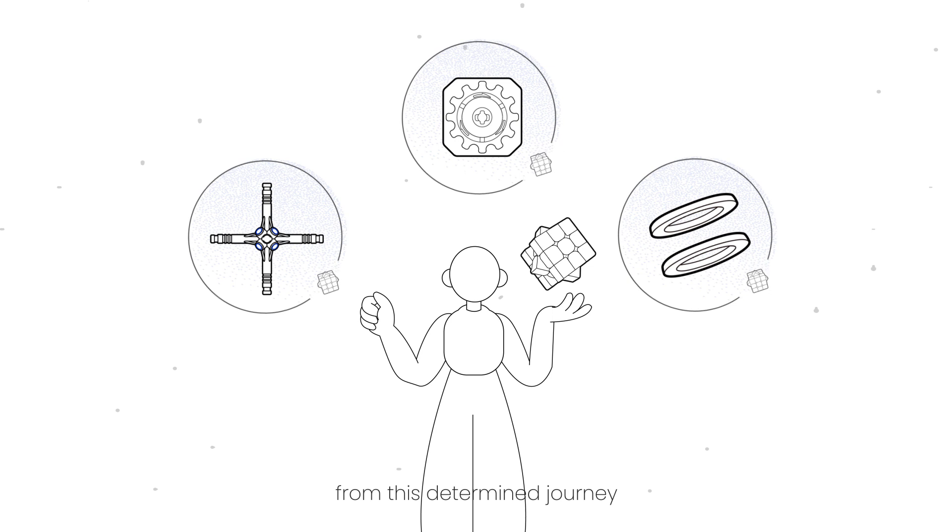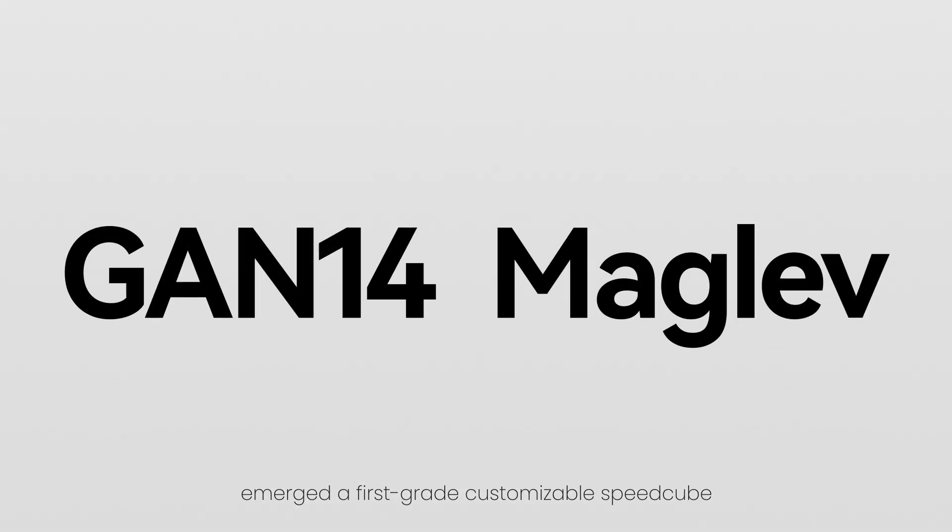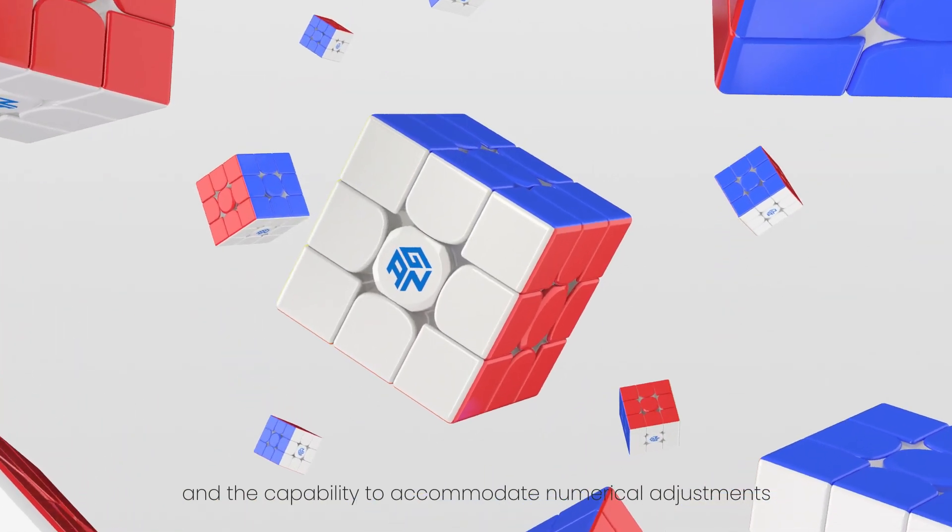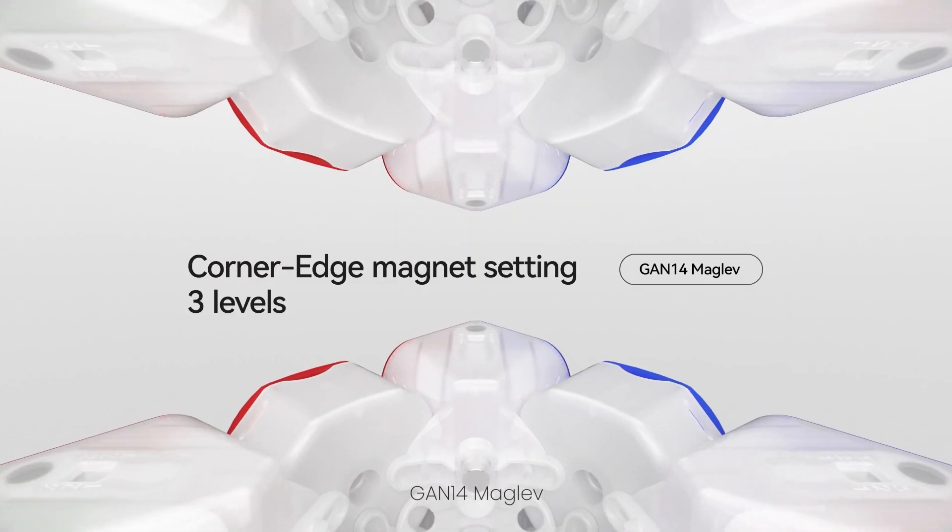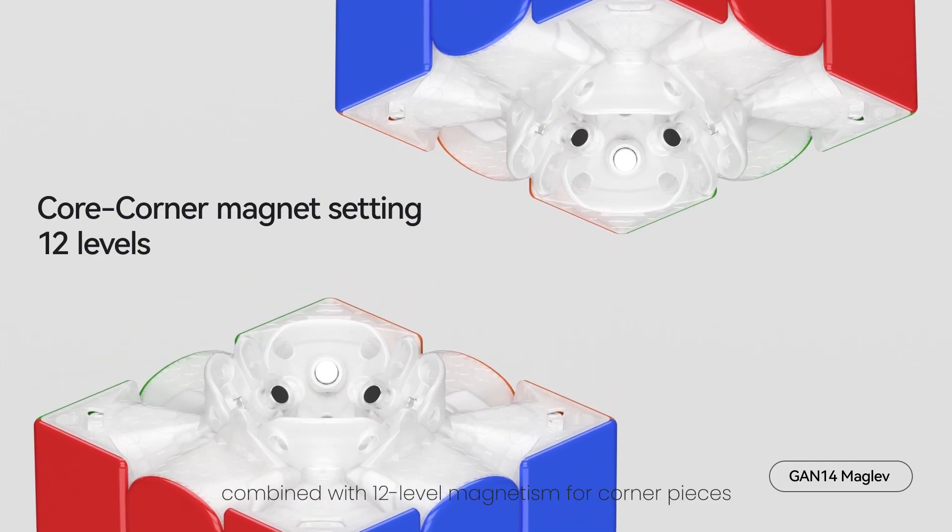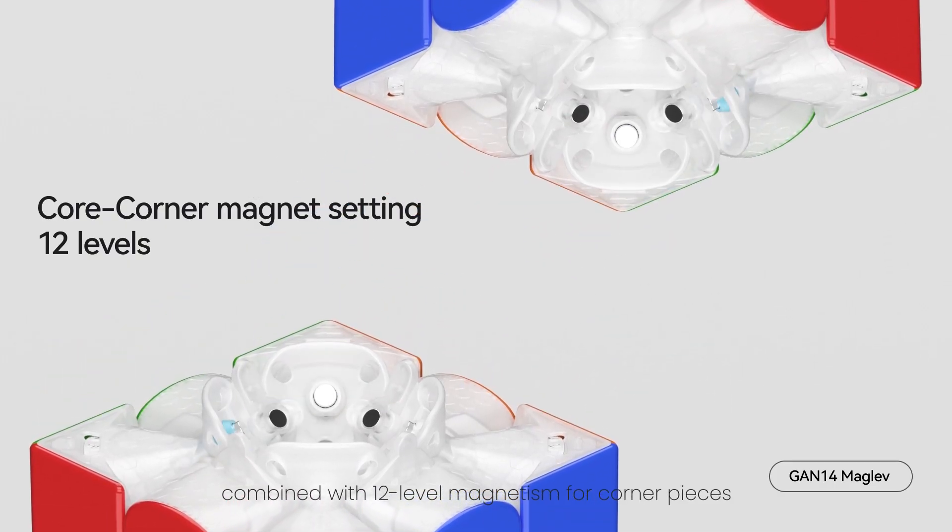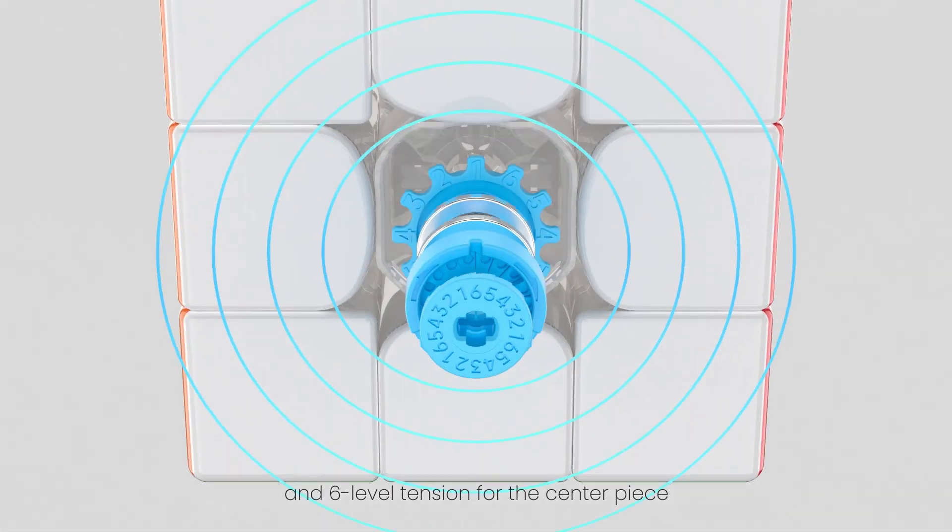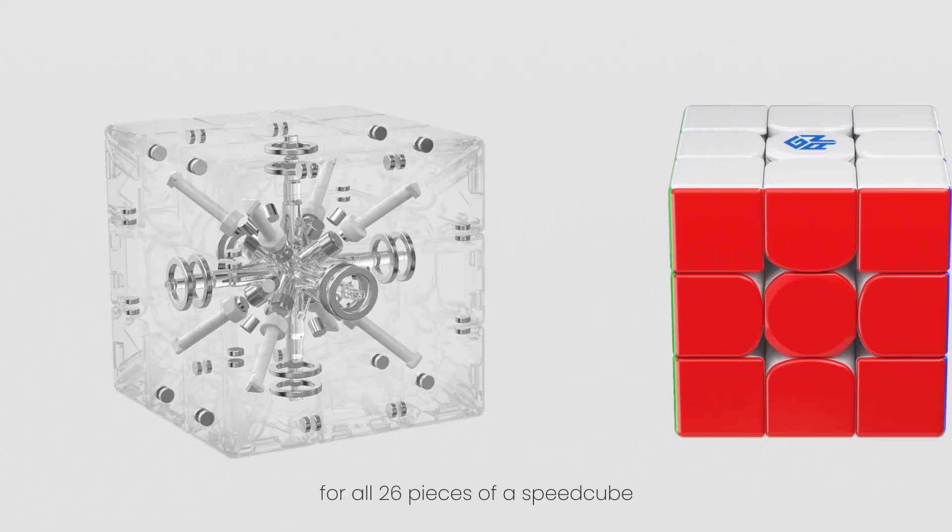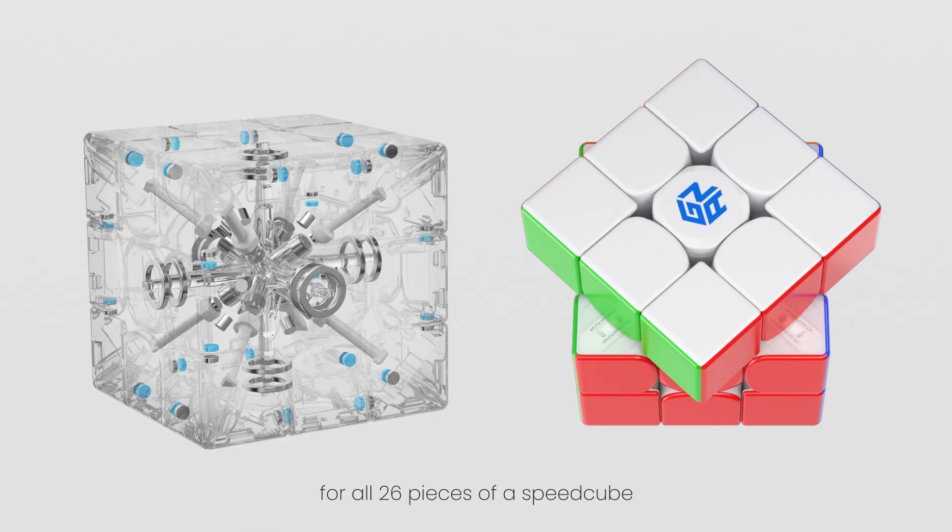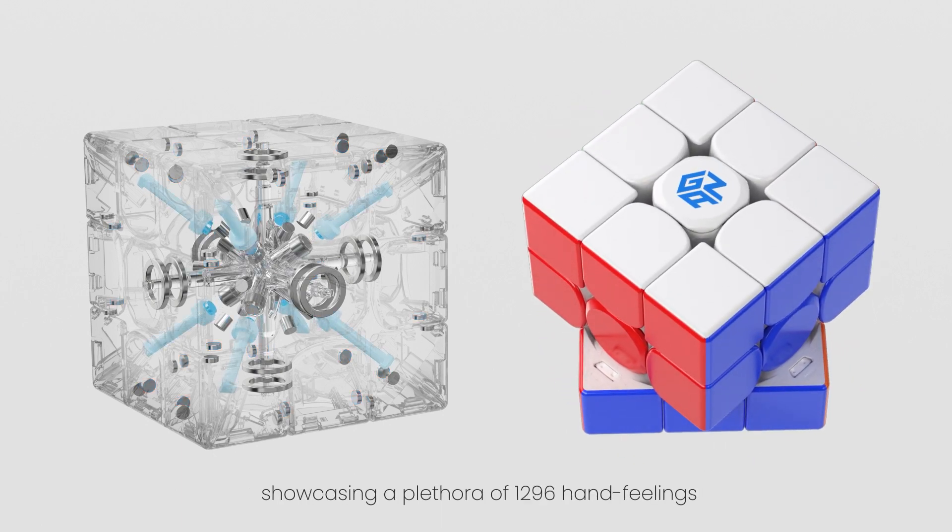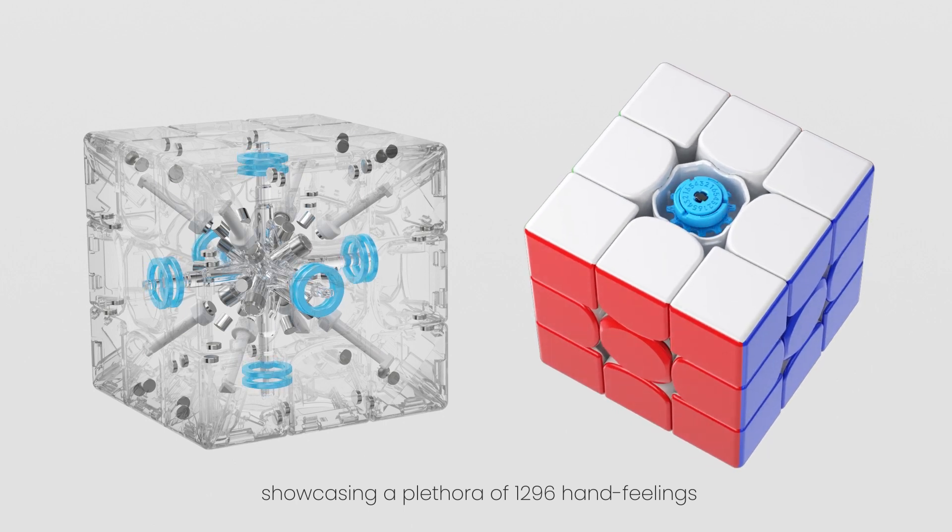And so, from this determined journey, emerged a first-class customizable speed cube, offering an astonishing array of over a thousand hand-feelings and the capability to accommodate numerical adjustments. GAN 14 Maglev, introducing three-level magnetism to the edge pieces, combined with 12-level magnetism for corner pieces, six-level centerpiece travel, and six-level tension for the centerpiece, marked the culmination of a numerical tuning revolution for all 26 pieces of a speed cube. What used to be unattainable intricate adjustments have now become effortlessly manageable, showcasing a plethora of 1,296 hand-feelings.